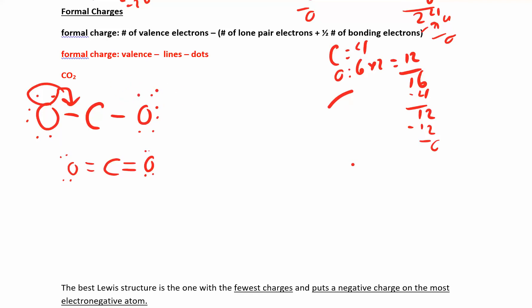But you could also have taken two sets of electrons from one side only, giving a structure where one oxygen has a triple bond to carbon and the other has a single bond. Both structures satisfy the octet rule — each atom has 8 electrons.